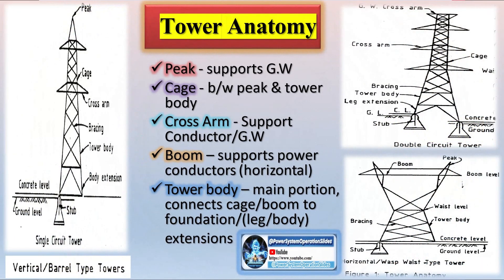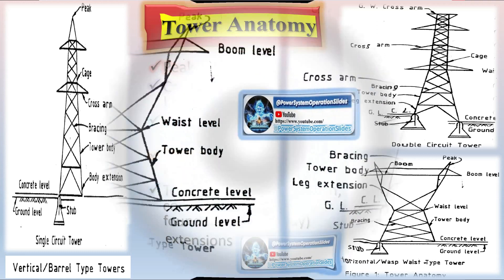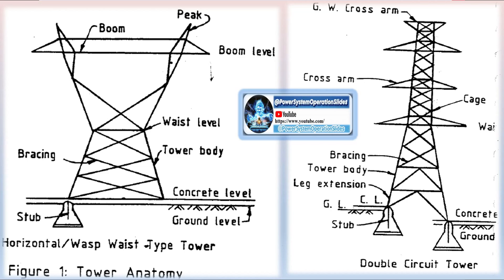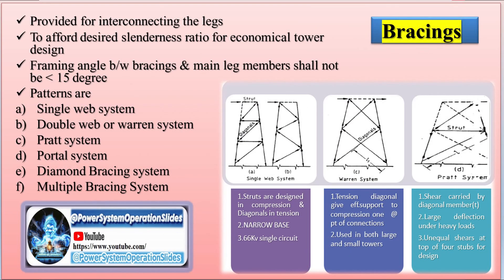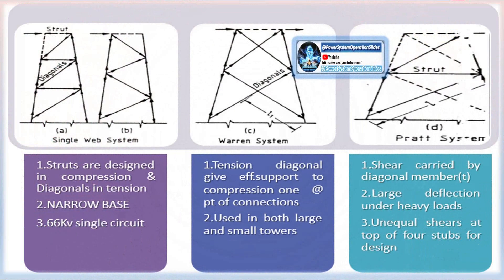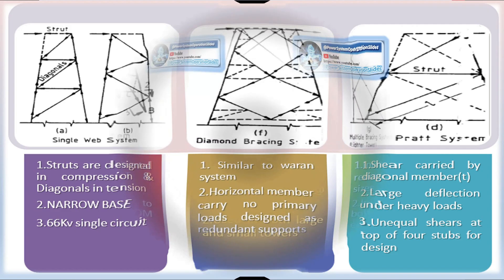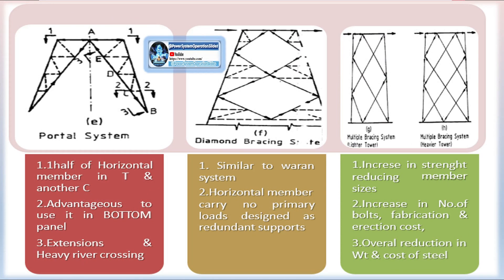The full tower schedule is finalized after the entire transmission line route has been surveyed, soil investigations have been completed for all tower locations, and the foundation and tower designs have been validated. The full schedule includes the tower layout for the entire length of the transmission line, specifying the spacing between towers, the type of tower (suspension, tension, or special towers), and the required foundation type for each tower. The schedule also accounts for factors such as wind loads, conductor sag, electrical clearances, and terrain variations. Once finalized, materials such as tower steel structures, conductors, insulators, and foundations can be ordered and transported to the construction site.